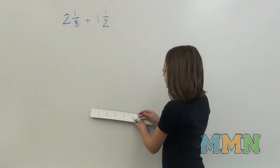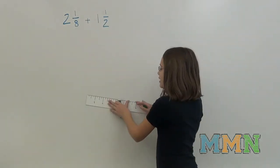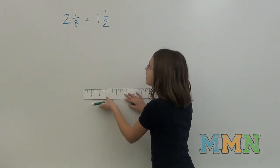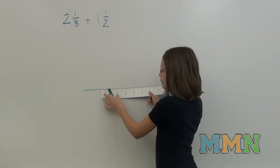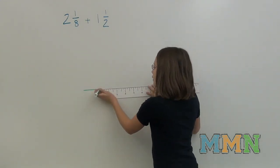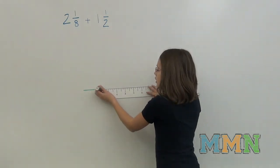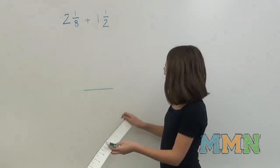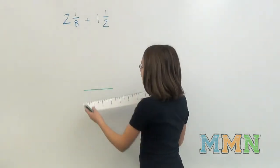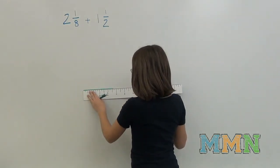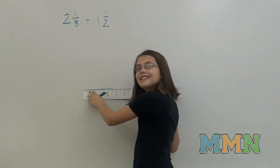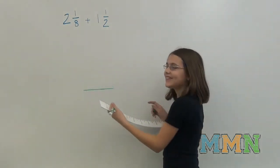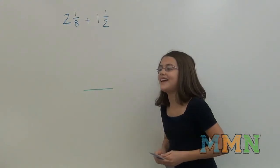All you have to do is draw a line 2 and 1 eighths long. Then, take your ruler and put it at the end of the line. And add another line that is 1 and 1 half inches. Now, all you have to do is measure it all together. And you get 3 and 5 eighths.